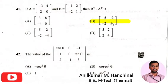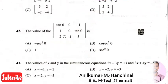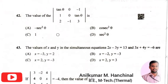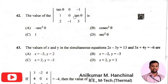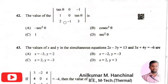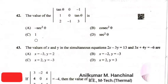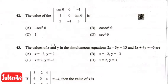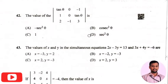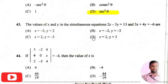The next question is the value of the determinant: tan theta, zero, minus one, one, zero, tan theta, two, minus one, three — the right answer is option four, that is sec squared theta.